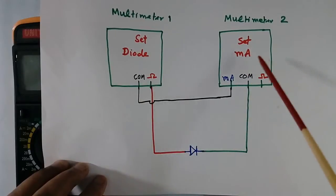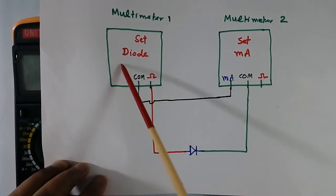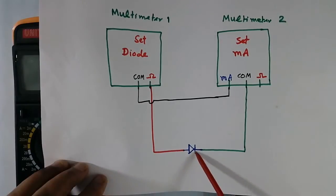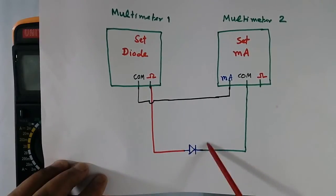So this is in series. So this will measure mA. This will measure diode drop. And here I will keep my diode. Whichever diode I want to test.